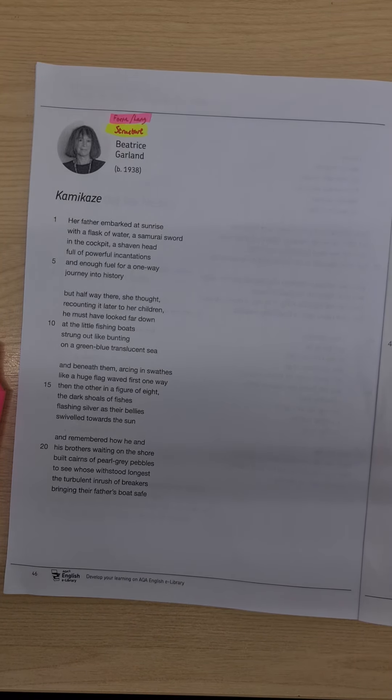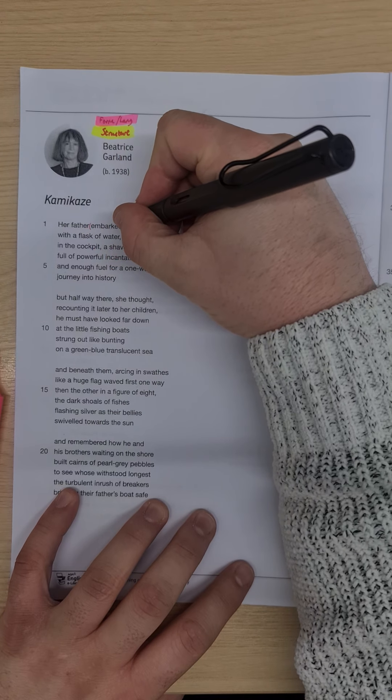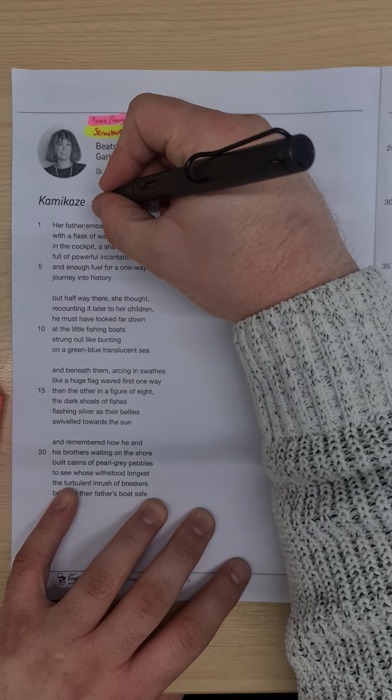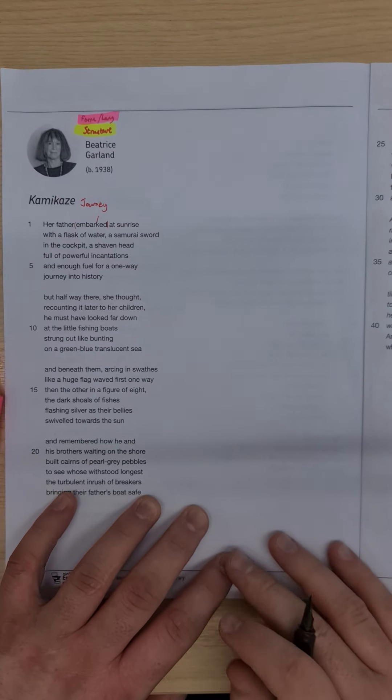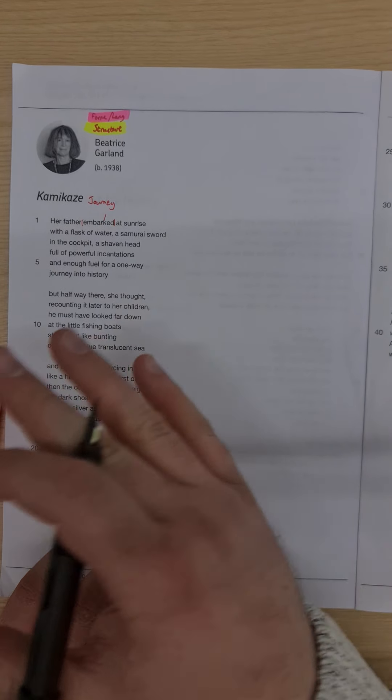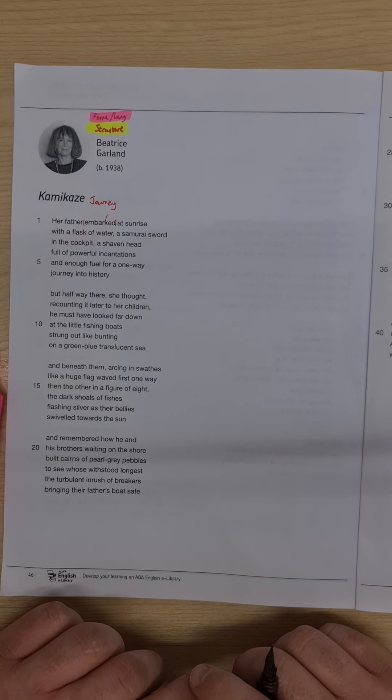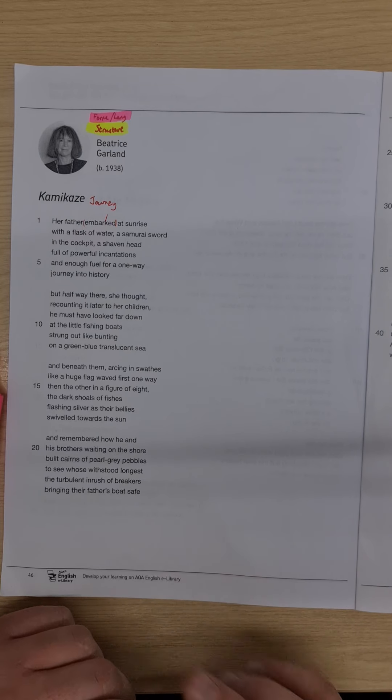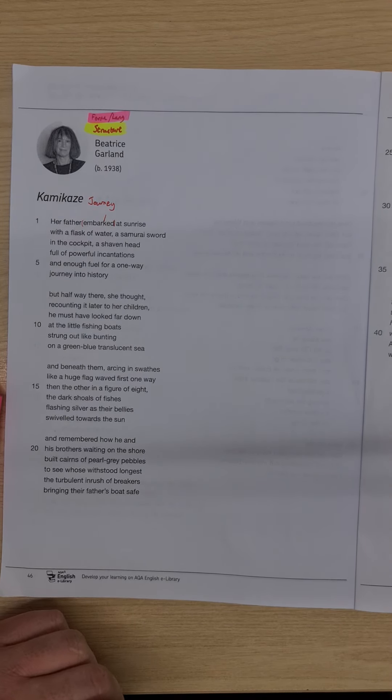So we start the poem with 'her father embarked at sunrise.' The use of the word 'embarked' here straightaway gives us the sense of some kind of journey. Now you can read into this as metaphorically as you like, or as physically as you like, but this is a one-way journey. He's embarking on his kamikaze mission. He's not coming home. So is this a journey not over to bomb the Americans or the enemy, but is this a journey into the afterlife?